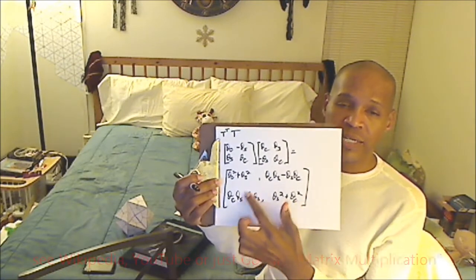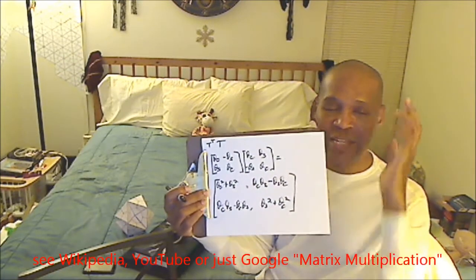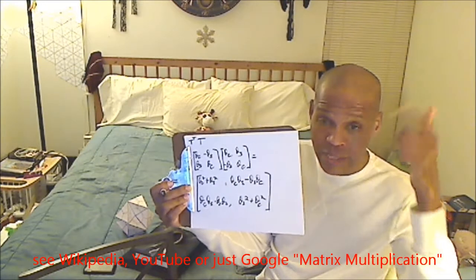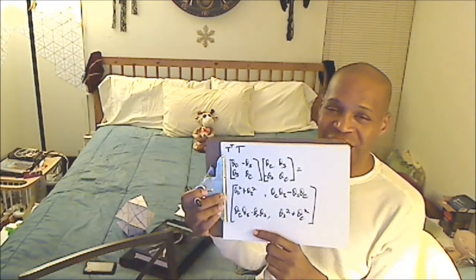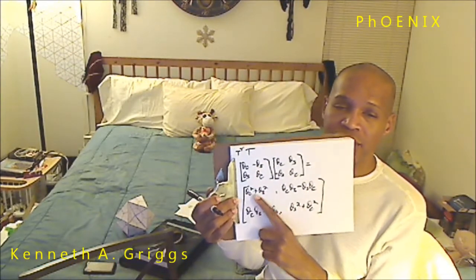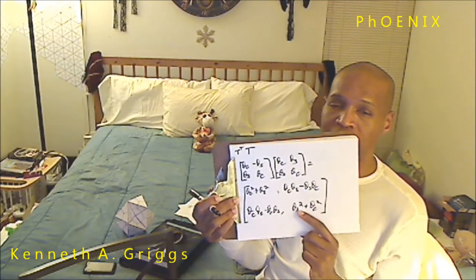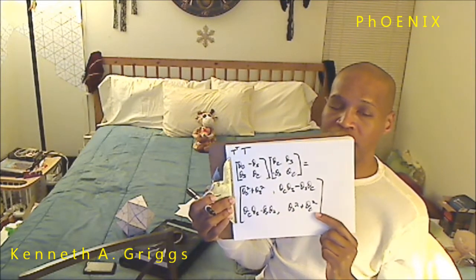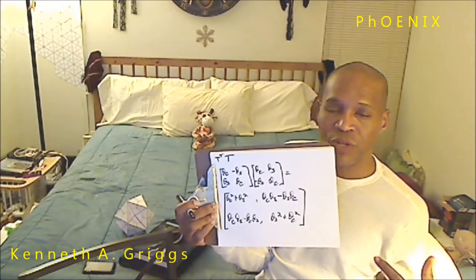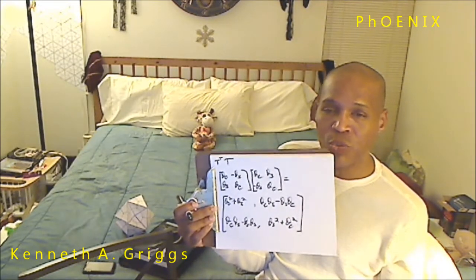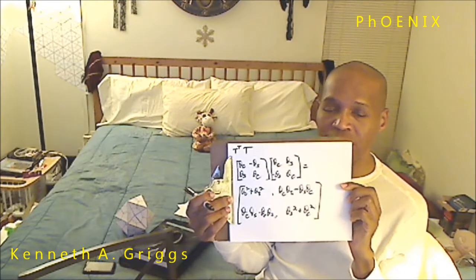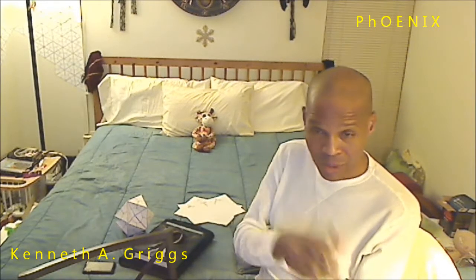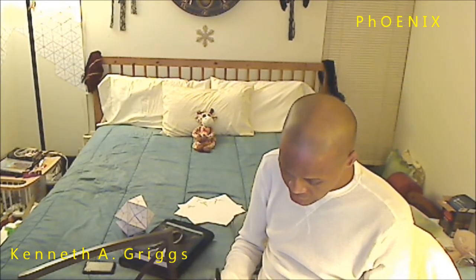If you don't know how to multiply matrices, look it up on Wikipedia — it's really easy, but you'll have to practice. What we find is theta c squared plus theta s squared, and also theta s squared plus theta c squared. That's a basic trigonometric identity: sine squared of theta plus cosine squared of theta always equals one.